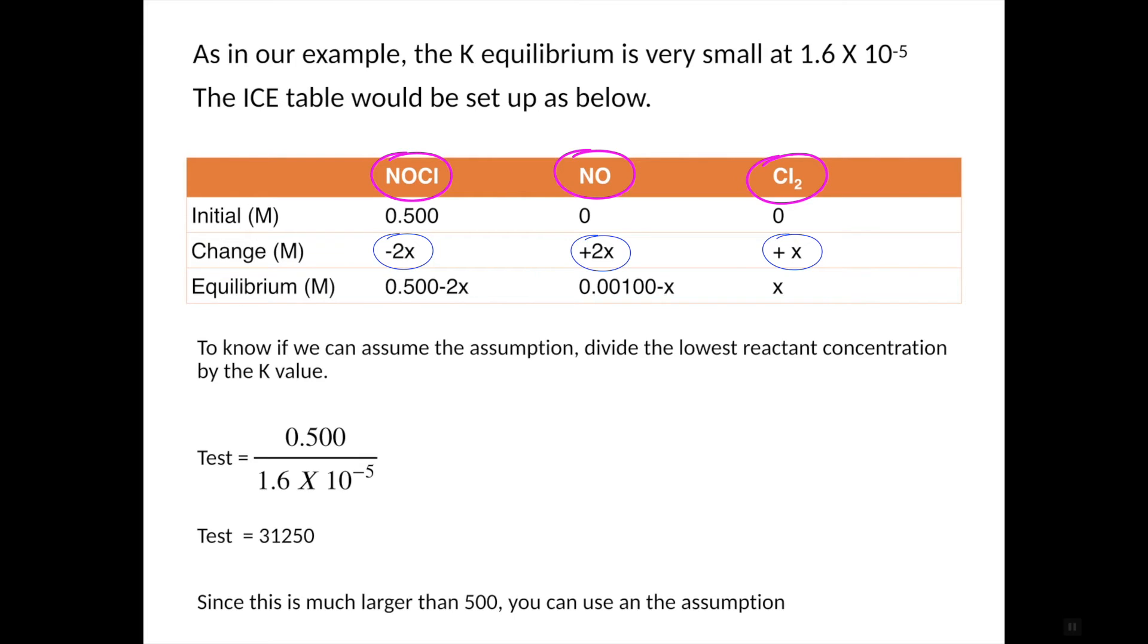So to apply the 500 rule, we take the lowest initial concentration, which is 0.500, divided by the K equilibrium, which is 1.6 times 10 to the negative five, and you end up with 31,250, which is certainly bigger than 500. So this means that you can use the assumption.